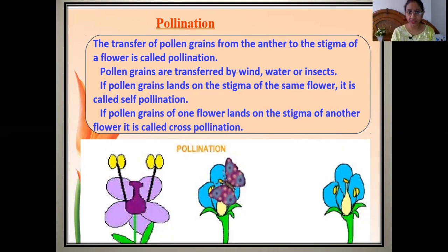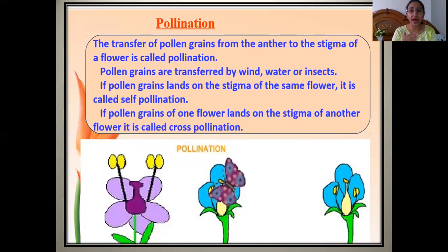If the pollen grains land on the stigma of the same flower, that is called self-pollination, because the transfer takes place from the anthers to the stigma of the same flower. But if the transfer of pollen grains takes place from anthers of one flower to the stigma of another flower, that is called cross-pollination, because two different flowers are involved.